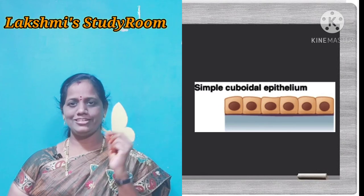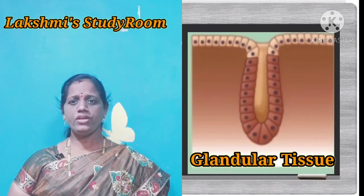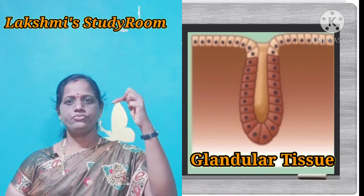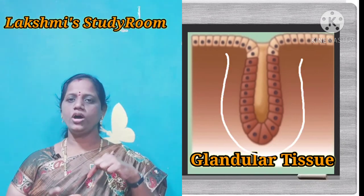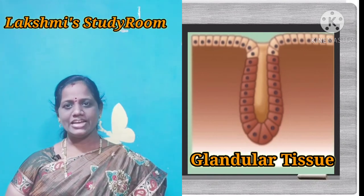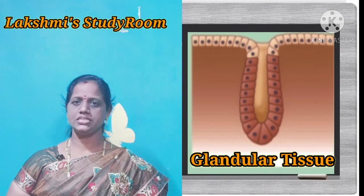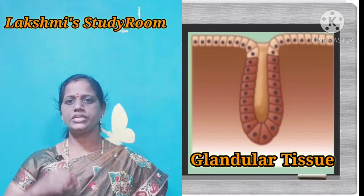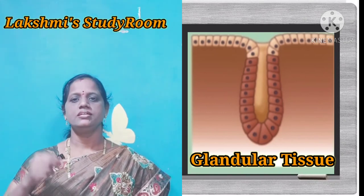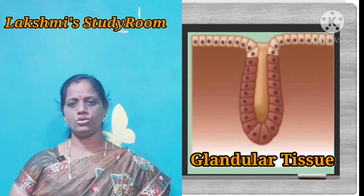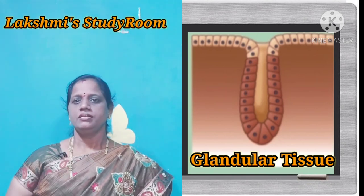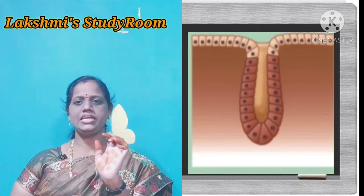The next one is glandular epithelial tissue. Sometimes some portion of epithelial tissue folds inwards and forms a multicellular glandular tissue. It is present in the salivary glands in our mouth, which secrete saliva. Skin cells also have sweat glands which secrete some secretions. So it is called multicellular glandular tissue.